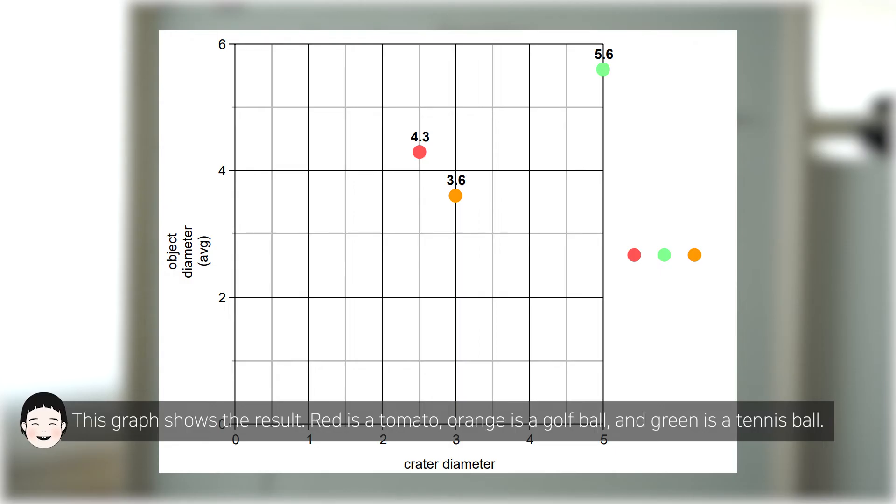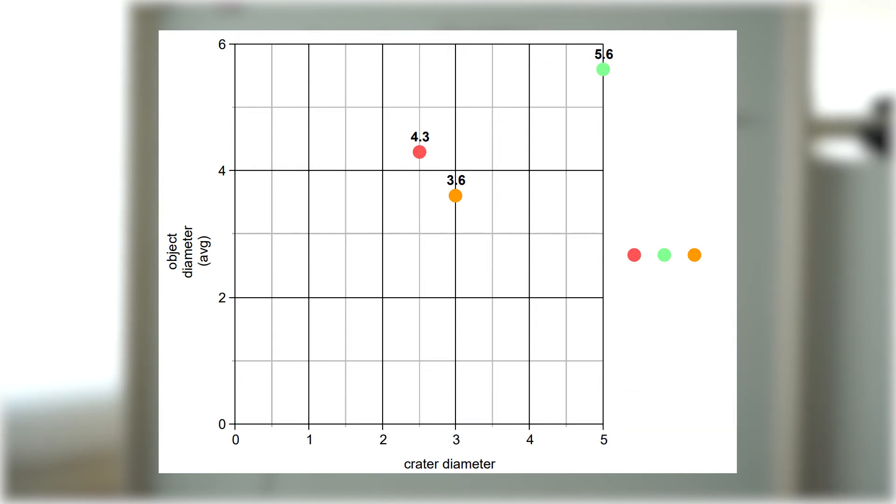This graph shows the result. Red is the tomato, orange is the golf ball, and green is the tennis ball. My final thoughts.